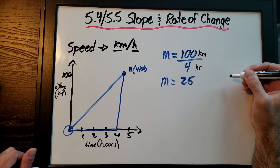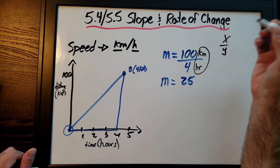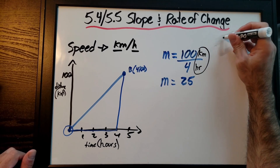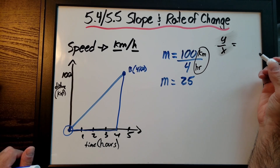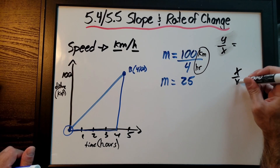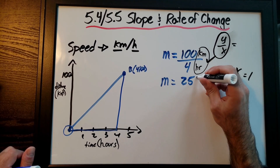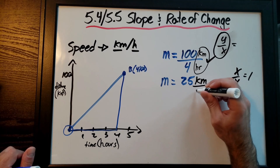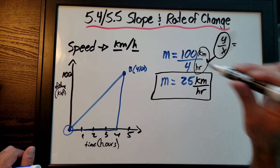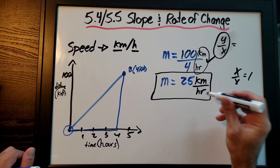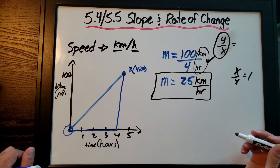The vertical axis is in kilometers and the horizontal axis is in hours. Dividing kilometers by hours gives kilometers per hour — you can't cancel different units the way you can with identical units. So the answer is 25 kilometers per hour. You must remember to include units when working with a rate of change — that's the only difference between slope and rate of change.